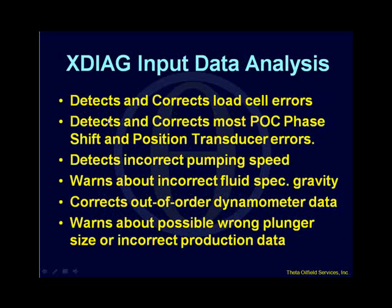What's unique about XDIAG is that it can actually detect and correct a number of errors that would otherwise result in bad results, such as if the load cell is reading too high or too low, if you have a problem with the POC data such as a phase shift between the load and position data, or if you have position transducer errors. The program can actually detect and correct a lot of these errors. It can correct incorrect pumping speed, warn you about incorrect fluid specific gravity, correct out-of-order dynamometer data, and warn you about the possibility of having the wrong plunger size or incorrect production data.